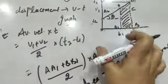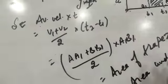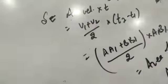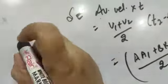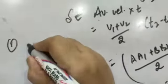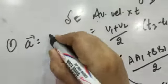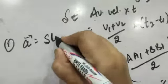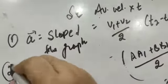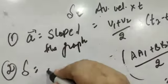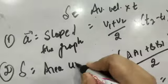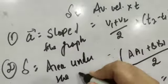From this velocity-time graph, we have concluded that: number one, acceleration is given by slope of the graph, and this is really very important; number two, displacement is given by area under the graph.